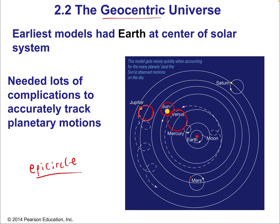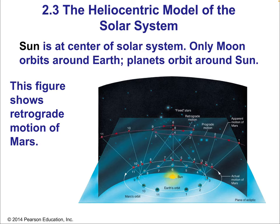The epicircle model was totally necessary, but science must explain observations with the simplest model possible — this was not the simplest model. There's no physics justification for all planets having these loops upon loops. This violates a golden rule called Occam's razor, which says that the simplest explanation is most likely the correct one. This takes us to the definitively modern heliocentric model of the solar system, which puts the sun at the center. The only thing that orbits the Earth is the moon.